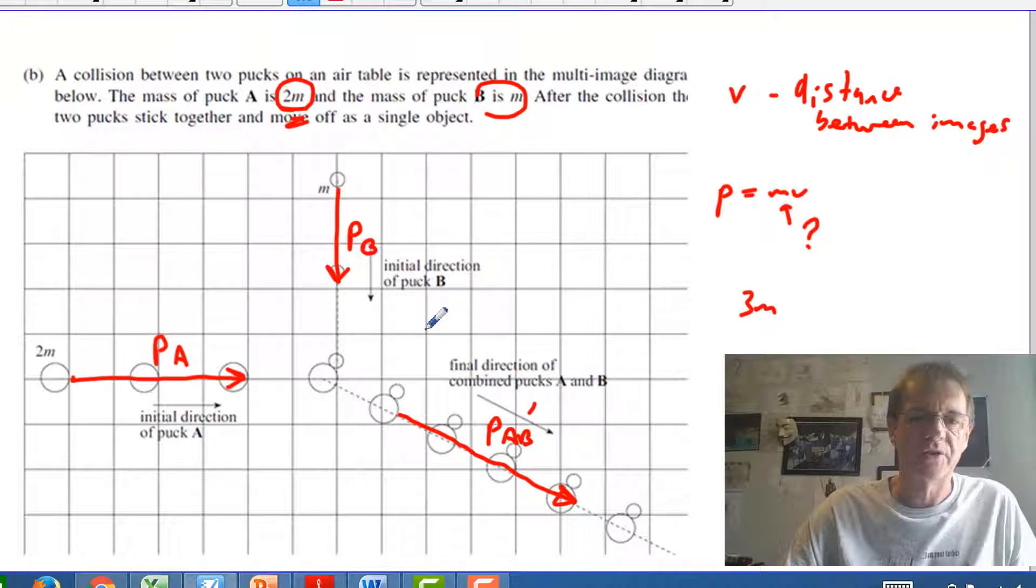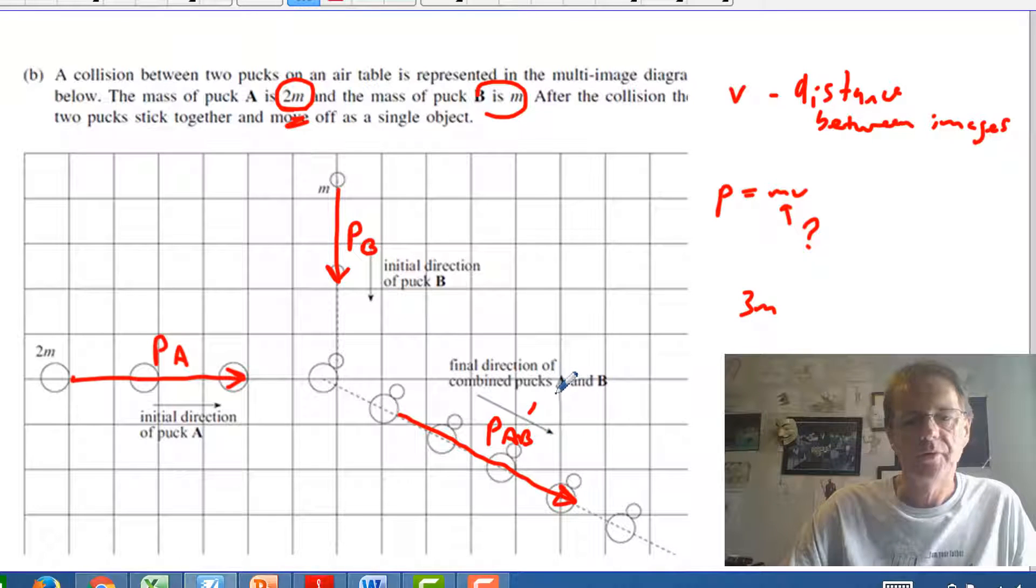So what we've done now is we've actually shown here's momentum beforehand as A and B and this is momentum after. To answer the question is momentum conserved then we need to compare the totals before and the totals afterwards. So to do that we would normally add these tip to tail.